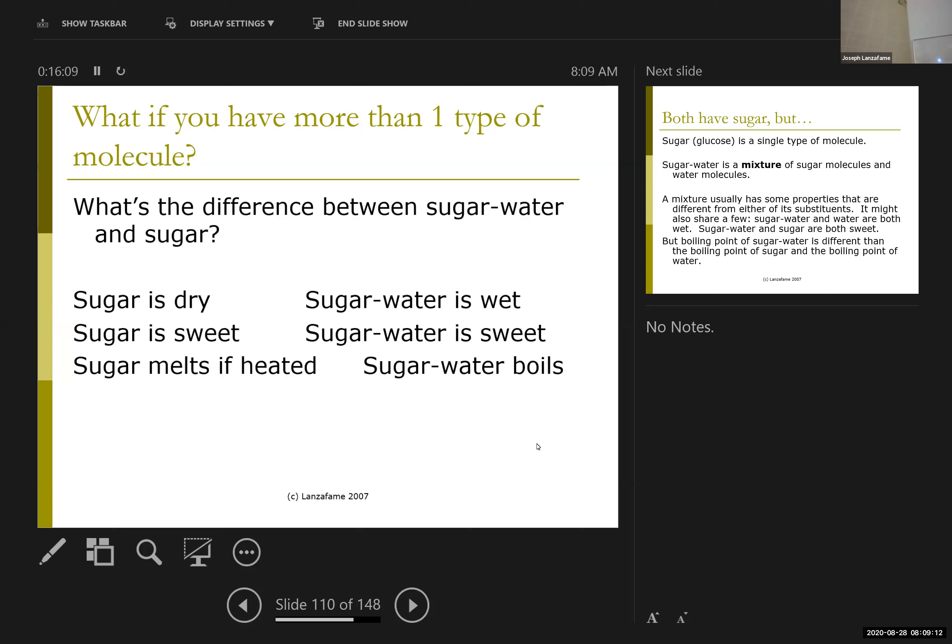So if I have sugar, it's sweet, and it's a white granular substance. I could also mix it with water, and of course water is wet. There's a really carefully defined physical property, water is wet, it's a liquid, it's not sweet, it flows.